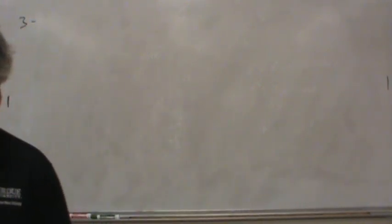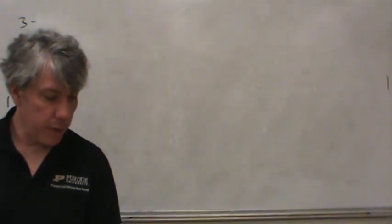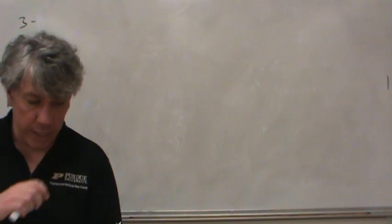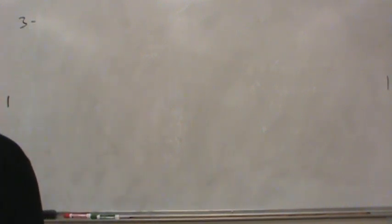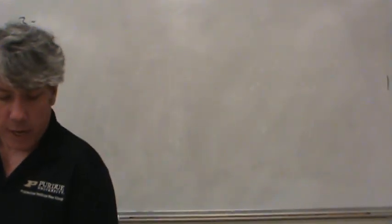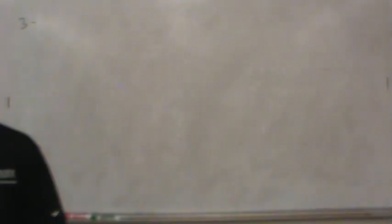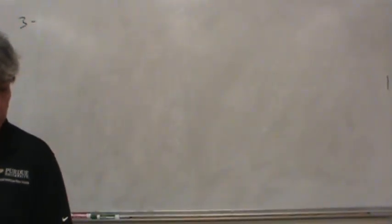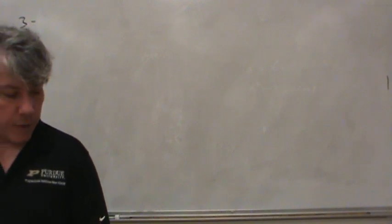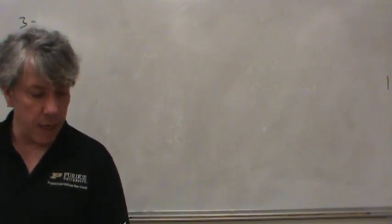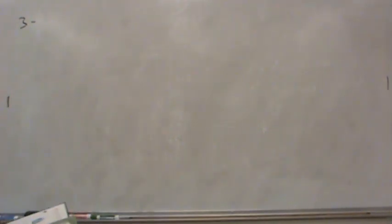This is problem 3-66 on page 112. The bucket has a weight of 80 pounds and is being hoisted using three springs, each having an unstretched length of 1.5 feet and stiffness of 50 pounds per foot. Determine the vertical distance D from the rim to point A for equilibrium.